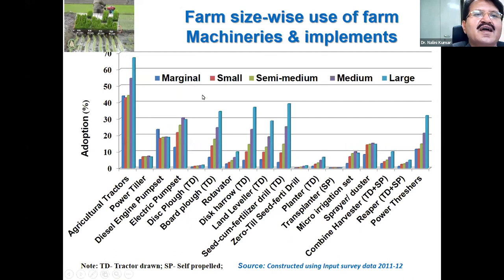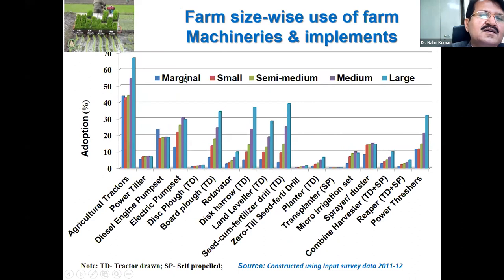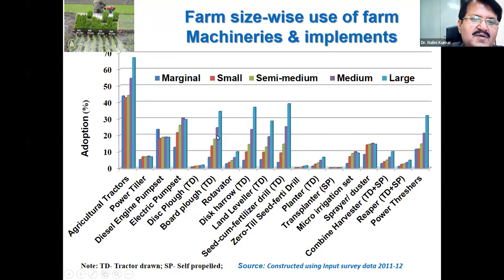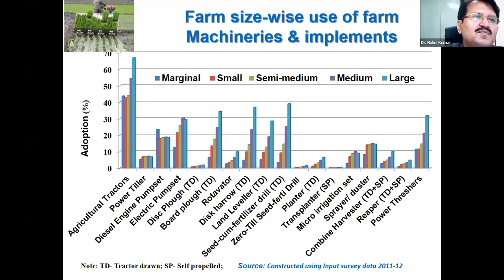Similarly, the same condition exists across farm size categories. In all farm machines, adoption is high on large farms and low on marginal farms. In the case of diesel engine pump sets, it is high on marginal farms mainly due to small size of land holdings. Farm mechanization is not uniform across farm size categories or regions, which requires attention of policy makers to improve mechanization of small and marginal farms, as well as lagged regions.